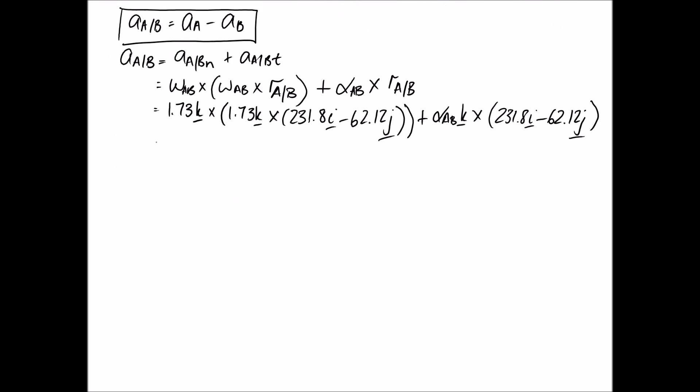Alright, so now it just becomes a case of simplifying this down. You want to do the brackets first before you start doing the other things. We'll leave the 1.73 K outside and expand what's going on inside the brackets first. So multiplying these together, you get 401.0 J plus 107.5 I.